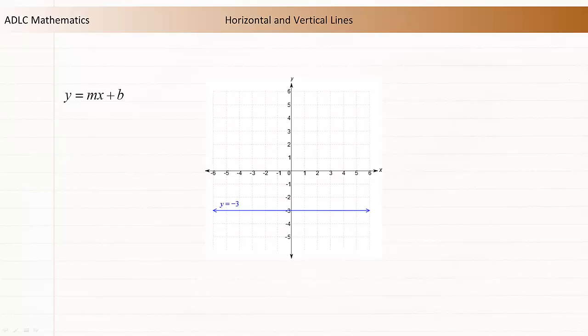Notice that the equations of the horizontal lines are all special cases of the slope-intercept form of a linear equation. For example, the horizontal line shown has a slope of 0 and a y-intercept of negative 3, which simplifies to y equals negative 3.